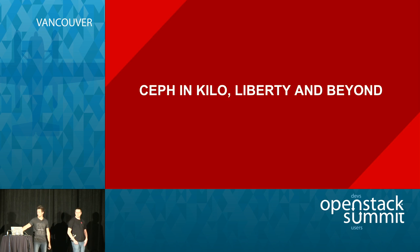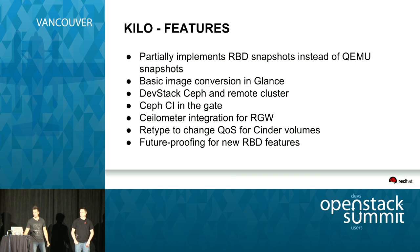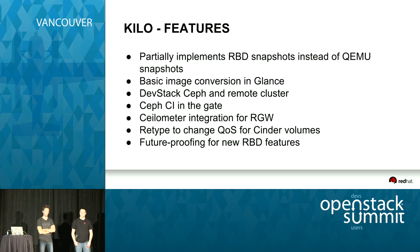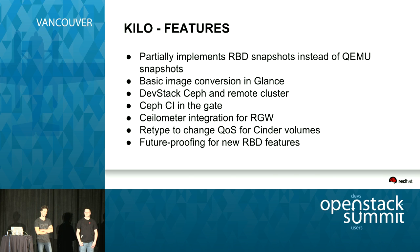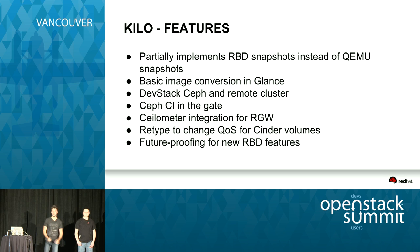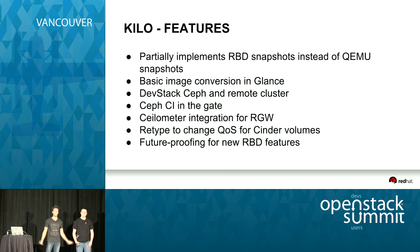What happened in Kilo, and what's going to happen in Liberty and beyond? This cycle was a little disappointing because we didn't get enough time and attention to get our patches merged. What we started doing is implementing RBD snapshots for QEMU. Currently, when you snapshot an instance, we use QEMU image and it gets done locally on the hypervisor, then it's streamed into Glance and uploaded into Ceph, which is extremely inefficient.